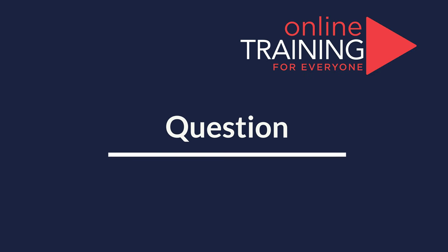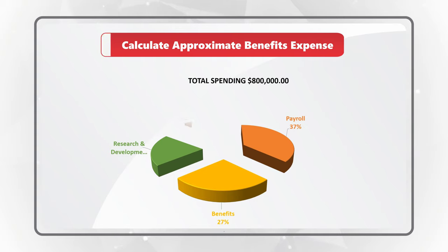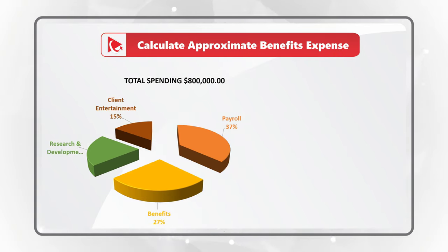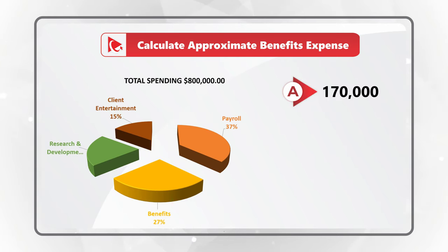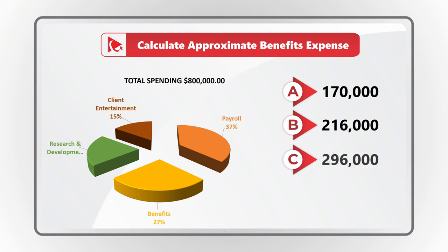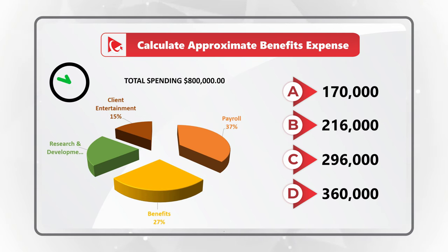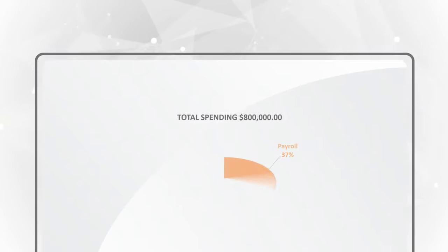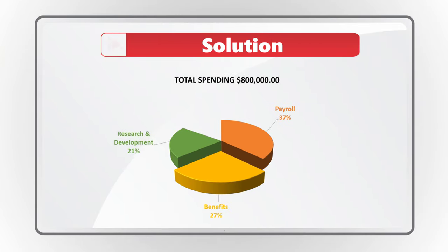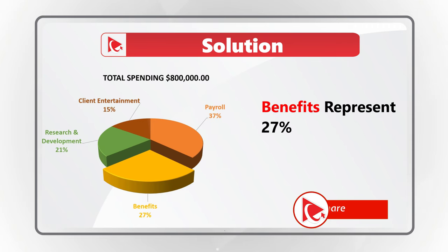Here is an amazing question with an unusual twist, which tests your knowledge of pie charts. You are presented with total spending for an organization, and you need to calculate the approximate benefits expense. In addition to benefits expense, you see payroll expense, research and development expense, as well as client entertainment. The final selection is within one of four possible choices. Take a close look, maybe pause this video to see if you can do the mental math and come up with the solution.